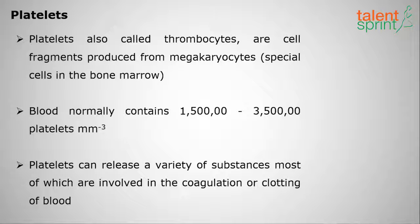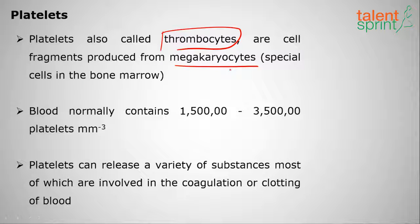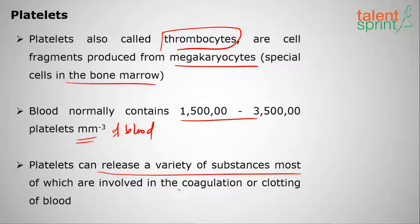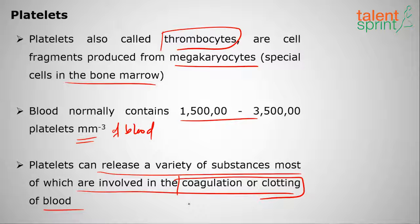Moving on to the fourth component: blood platelets, also called thrombocytes. These are cell fragments produced from megakaryocytes, special cells in the bone marrow. Blood normally contains 150,000 to 350,000 platelets per millimeter cube. Platelets release a variety of substances mostly involved in coagulation, so platelets and plasma are very important for the clotting of blood.